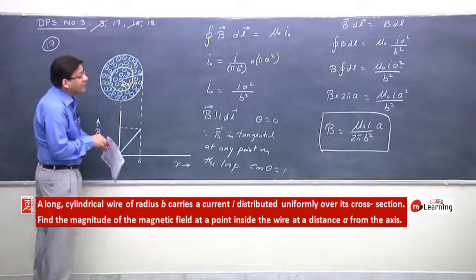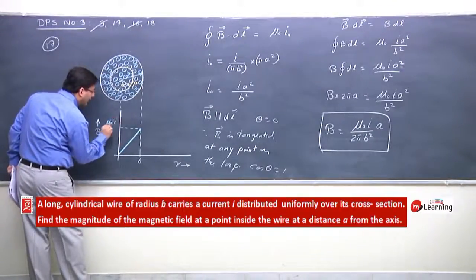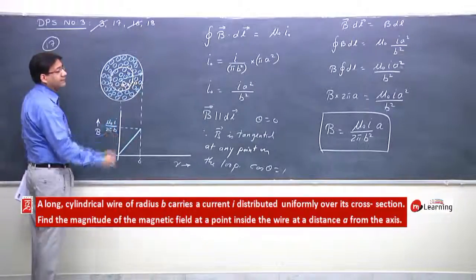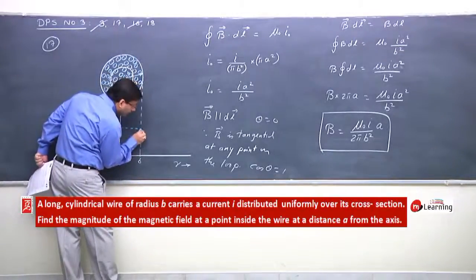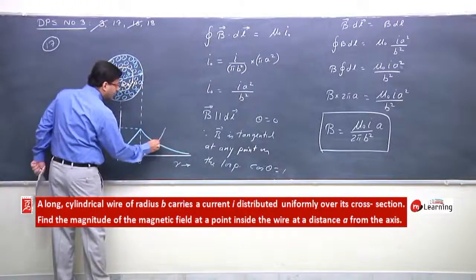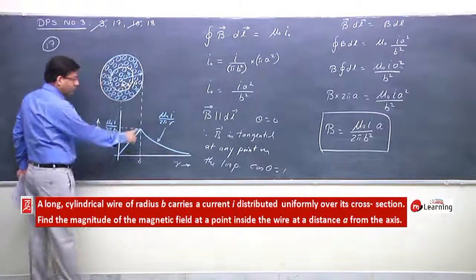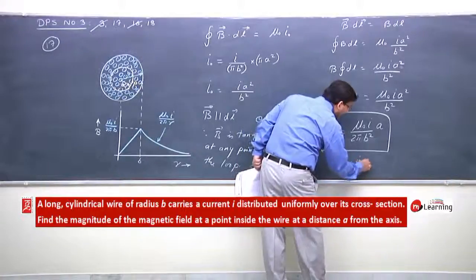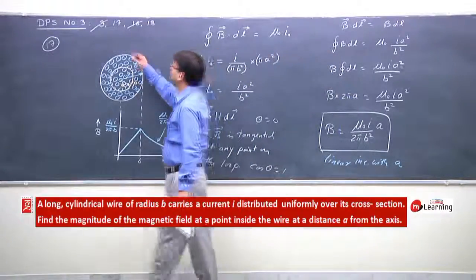The maximum value at the surface is mu naught I by 2 pi B. Outside, it's mu naught I by 2 pi r. Inside, there's linear increase with A. Thank you.